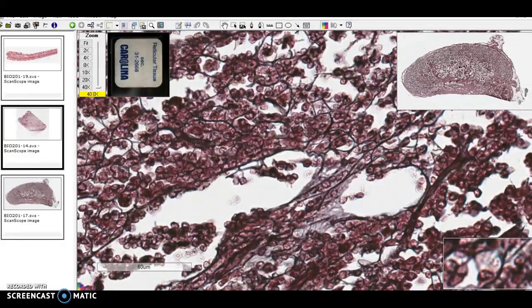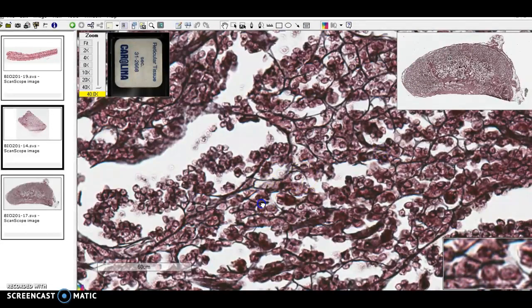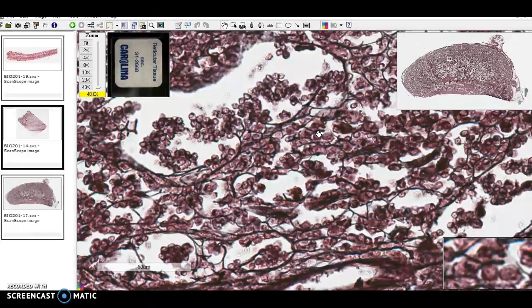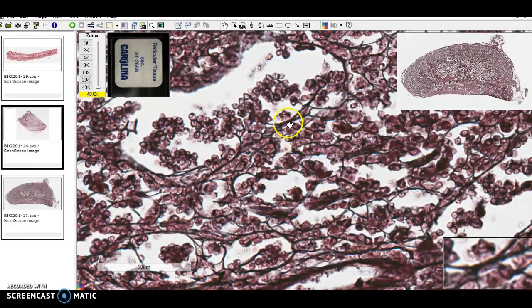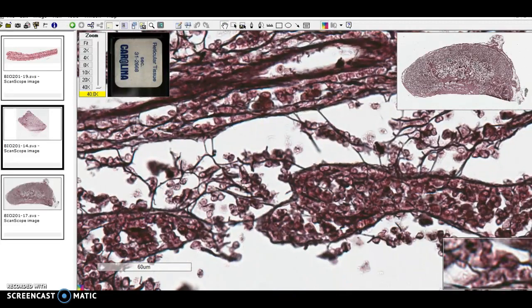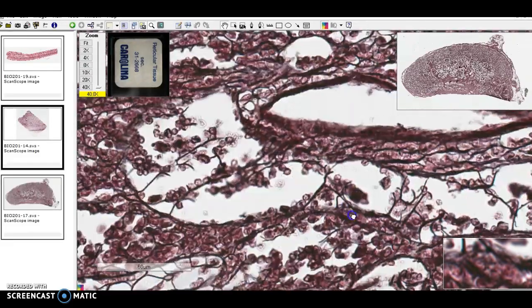Those are reticular fibers, and you will recall that the areolar tissue, the other loose connective tissue, had abundant collagen fibers and elastic fibers. This tissue specializes in reticular fibers, so it has a little bit different fibers than some of our other connective tissues.